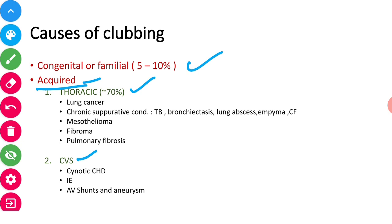In thoracic: any cancer like lung cancer, mesothelioma, fibroma, fibrosis. Besides that some chronic conditions like TB, lung abscess, cystic fibrosis, bronchiectasis. These are the causes of clubbing.